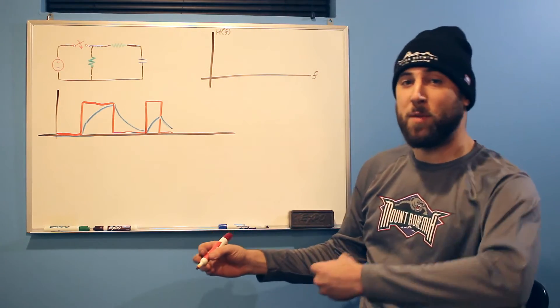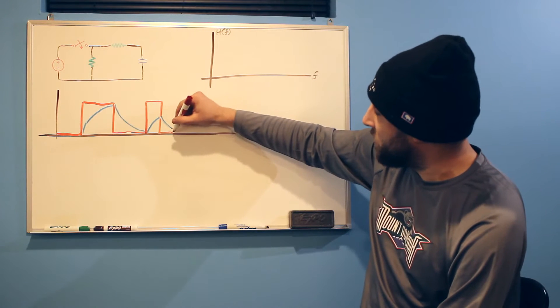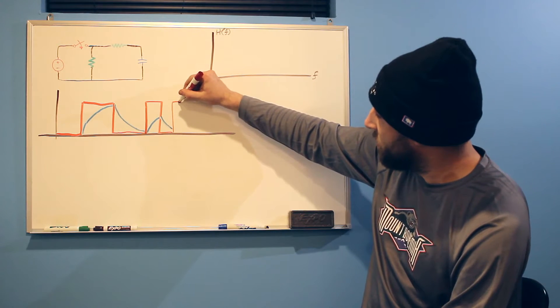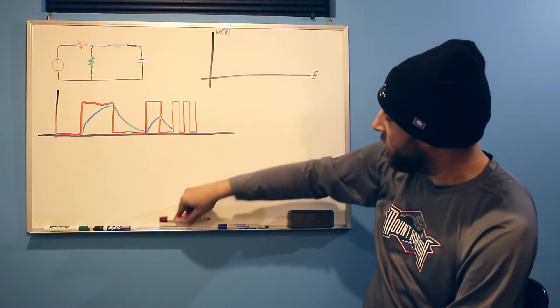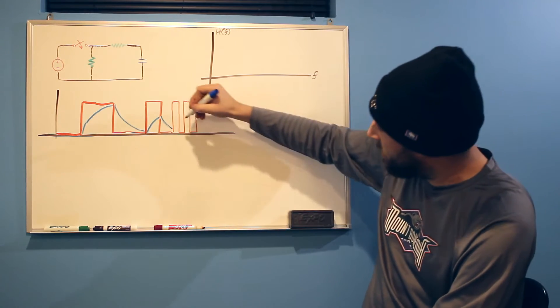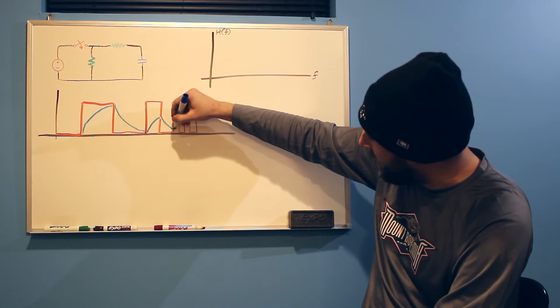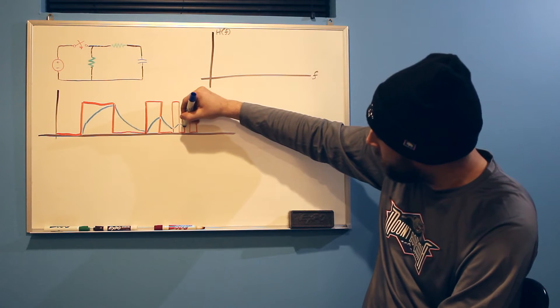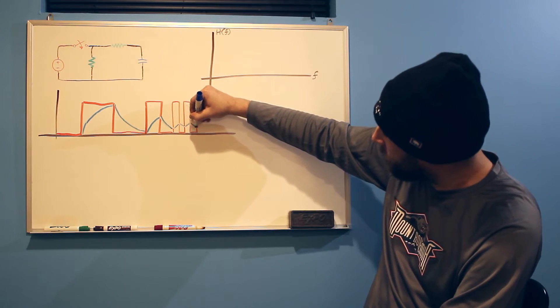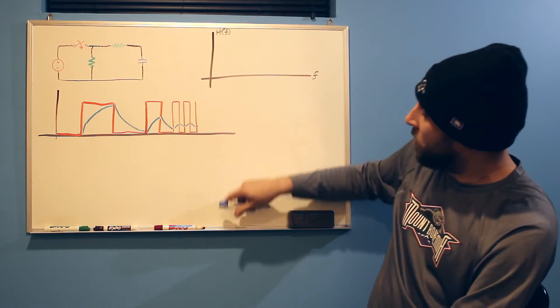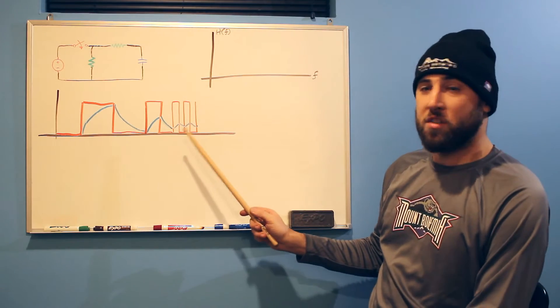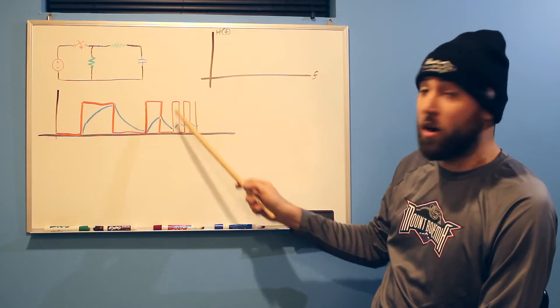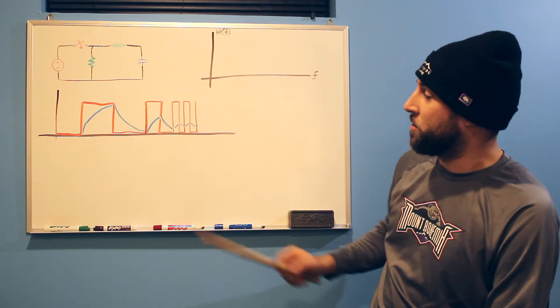So let's be more mean to it. Let's turn that switch on and off faster. Now what you begin to see is that the signal just kind of starts to flatten out. It's making an honest effort but we're just switching that little switch on and off too quickly for it to respond.